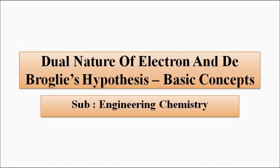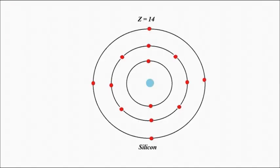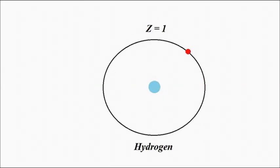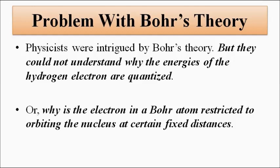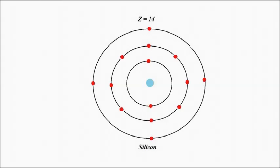We know that Bohr postulated that electrons revolve around the nucleus in specific designated orbits with fixed radius and fixed energies, and as a result they do not spiral into the nucleus, resulting in the annihilation of electron and proton. That gives rise to the stability of the atom. But one thing Bohr could not explain was why the electrons were restricted to only that specific orbit — why the radius was fixed, why an electron belonged to that orbit only, why it is restricted to K, L, M, or N orbit, and not higher or lower.